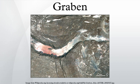Half graben: In many rifts the graben are asymmetric, with a major fault along only one of the boundaries, and these are known as half graben. The polarity of the main bounding faults typically alternates along the length of the rift. The asymmetry of a half graben strongly affects syntectonic deposition. Comparatively little sediment enters the half graben across the main bounding fault, due to the effects of footwall uplift on the drainage systems.